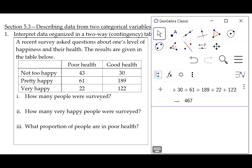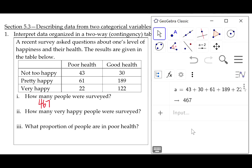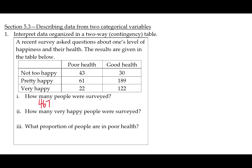Next, how many very happy people were surveyed? In order to answer this question, I need to add up just the people in the very happy row. So that's the 22 plus 122, and that gives me 144.